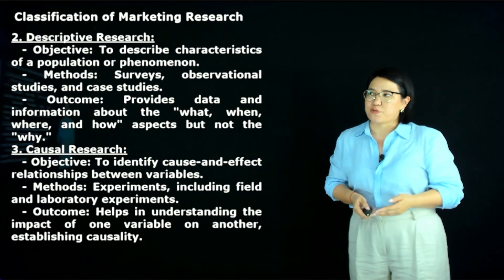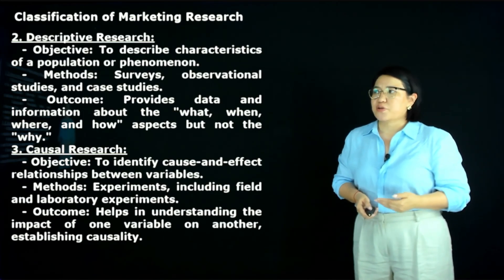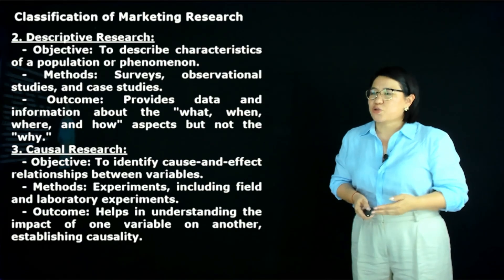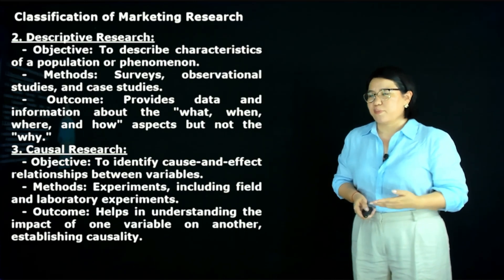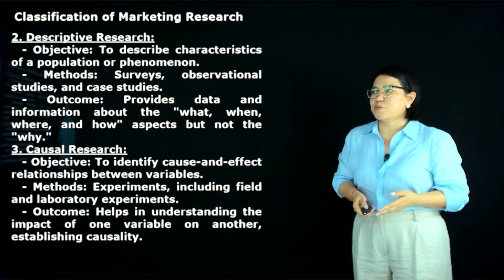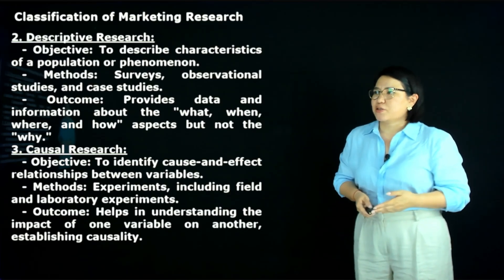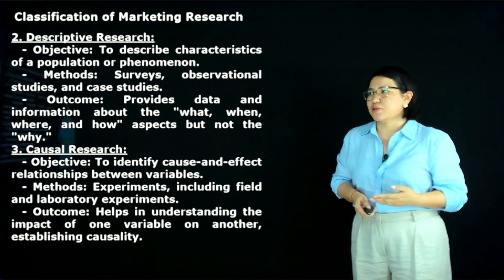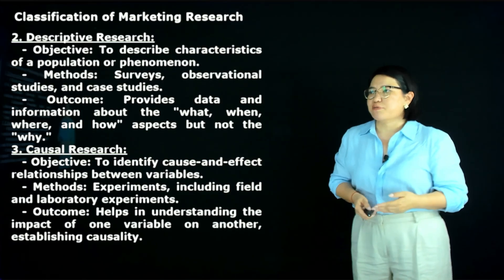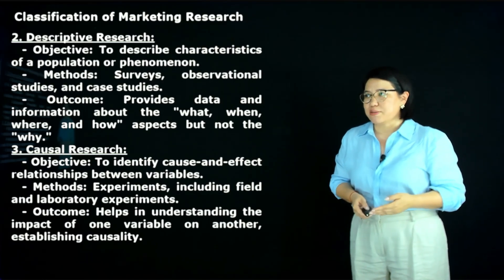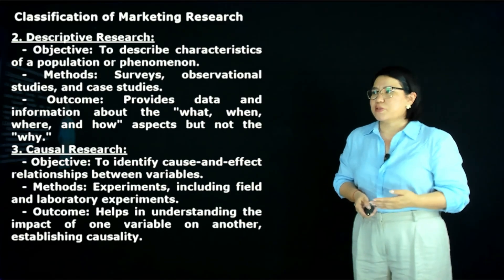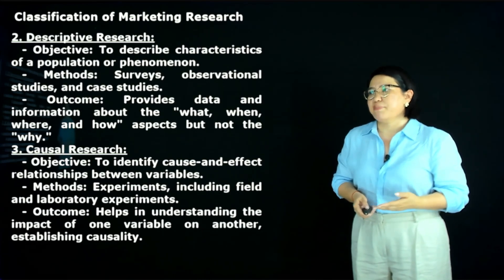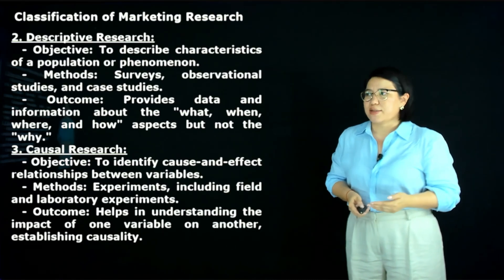The next classification is descriptive research. Its objective is to describe characteristics of a population or phenomena. Methods include surveys, observational studies and case studies. The outcome provides data and information about the what, when, where and how aspects, but not the why. Next is causal research. Its objective is to identify cause-and-effect relationships between variables. Methods include experiments, such as field and laboratory experiments. The outcome helps in understanding the impact of one variable on another, establishing causality.